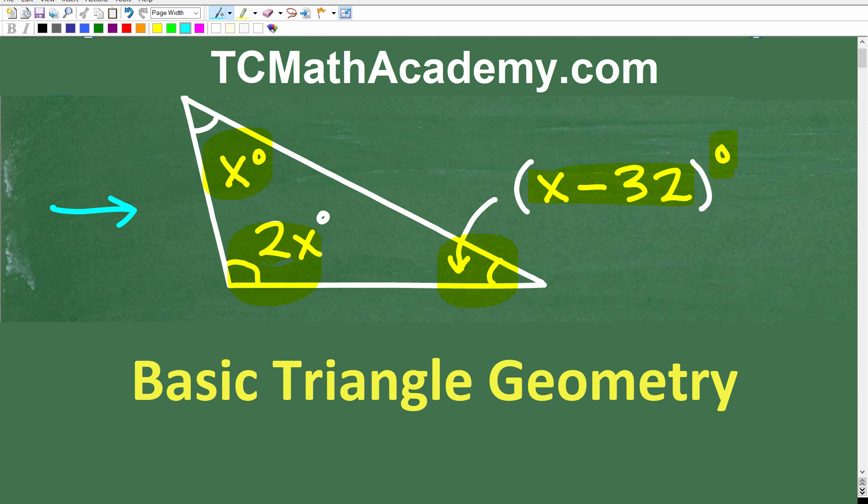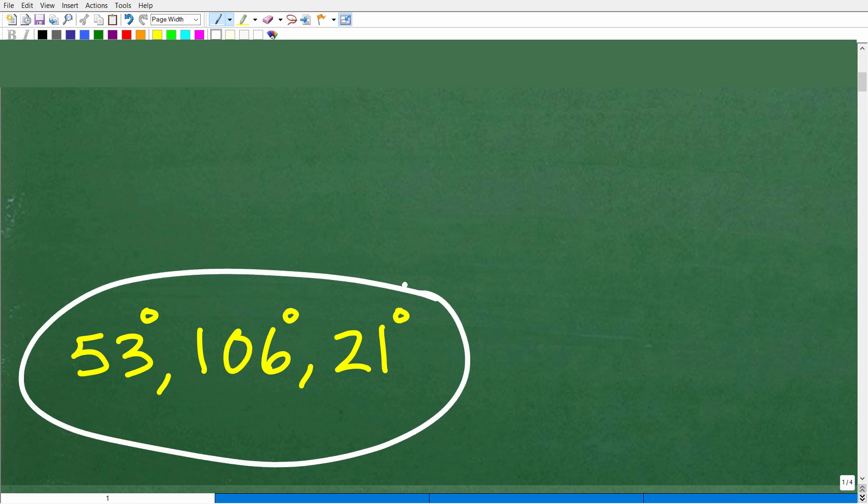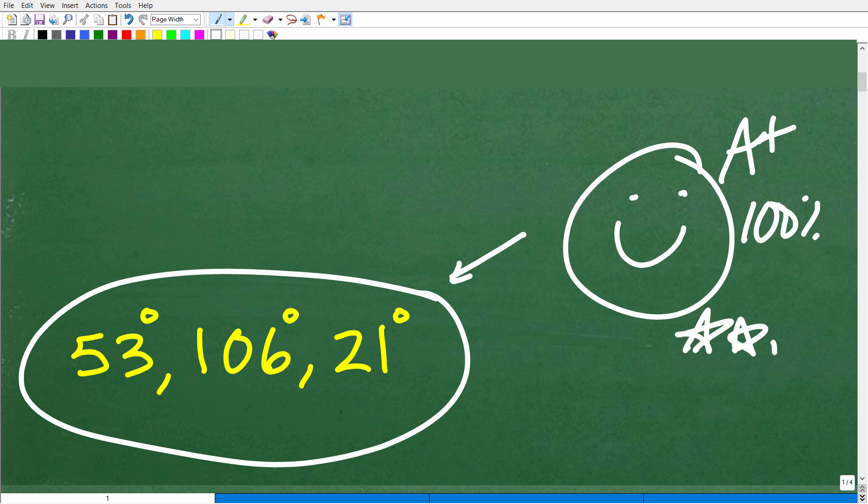Okay, so we have three angles here. We're looking for these angles. What are they? Well, let's go ahead and see the answer. The actual answer is 53 degrees, 106 degrees, and 21 degrees. So if you came up with these three angles, well, then that is fantastic. We must celebrate by giving you a nice little happy face and A plus a 100% and multiple stars. So you could brag to your friends and family that indeed you are a professional expert in the area of triangles.